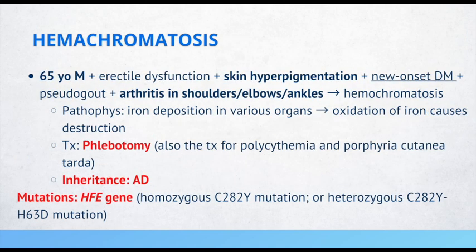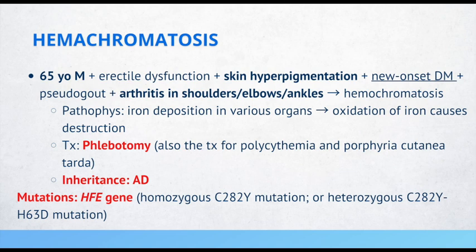Hemochromatosis. Consider this in a 65-year-old male with erectile dysfunction, skin hyperpigmentation, new onset diabetes, pseudogout, and arthritis in the shoulders, elbows, and ankles. The pathophysiology is iron deposition in various organs, which undergoes oxidation causing destruction. We treat with phlebotomy, which is also the treatment for polycythemia and porphyria cutanea tarda. It has autosomal dominant inheritance, and patients are found to have mutations in the HFE gene.